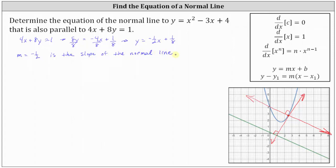Now let's work on determining the point of tangency. To find the point of tangency, we'll have to set the first derivative equal to the slope of the tangent line. The slope of the tangent line is equal to the negative reciprocal of negative 1 half, which is positive 2. So m equals 2 is the slope of the tangent line.